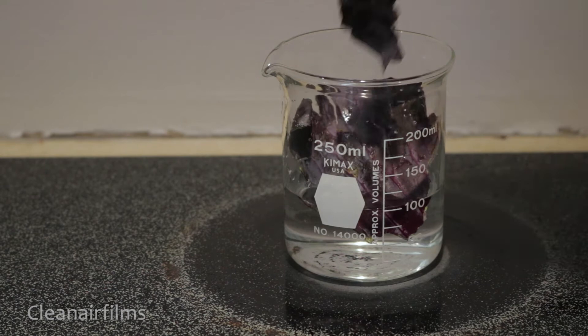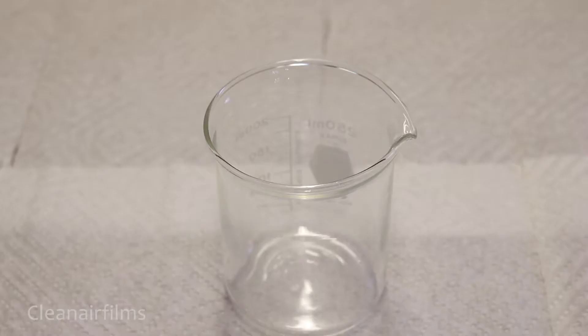First, we need to make a basic pH indicator. We can do this with some purple cabbage.